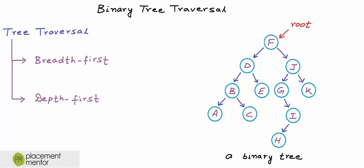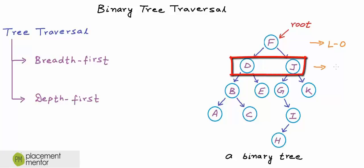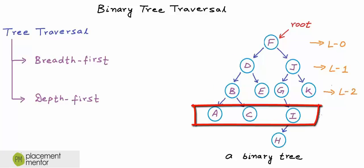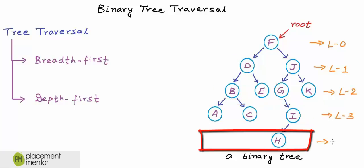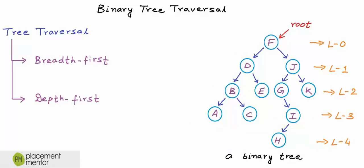In breadth first approach, we would visit all the nodes at the same depth or level before visiting the nodes at the next level. In this binary tree, the node with value F which is the root node is at level 0. Depth of a node is defined as the number of edges in the path from root to that node. A root node would have depth 0. Nodes D and J are at depth 1, so they are at level 1. These four nodes are at level 2, these three nodes are at level 3, and finally the node with value H is at level 4.